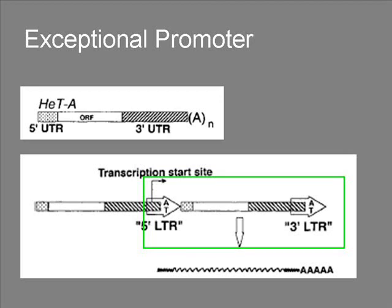The promoter functions kind of like a Pol II promoter, being upstream of the transcript. However, it is on a different element. The upstream region of the element is the 3' UTR of the other element.